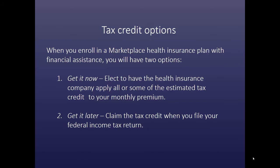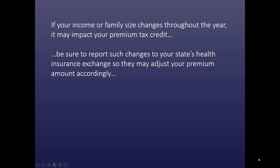When you enroll in a marketplace health insurance plan with financial assistance, you'll have two options. You can get it now — elect to have the health insurance company apply all or some of the estimated tax credit to your monthly premium — or you can get it later and claim the tax credit when you file your federal income tax return. If your income or family size changes throughout the year, it may have an impact on your premium tax credit, so you want to be sure to report such changes to your state's health insurance exchange so that they can adjust your premium amount accordingly.